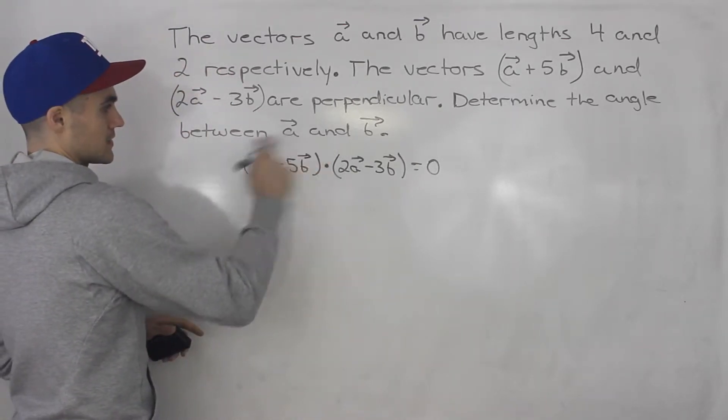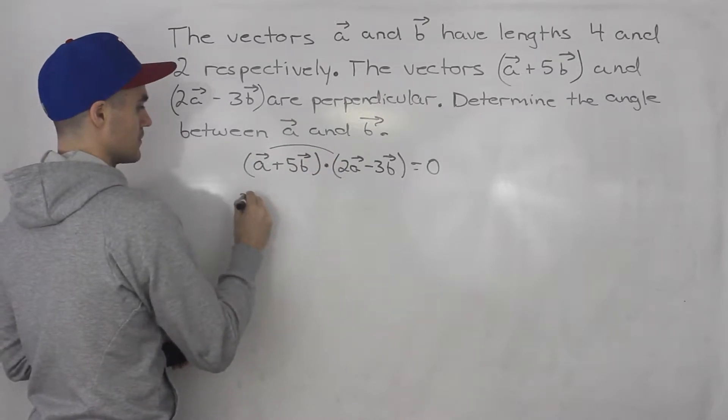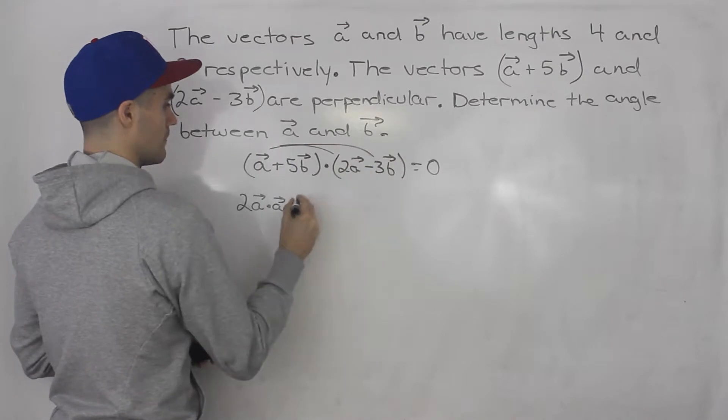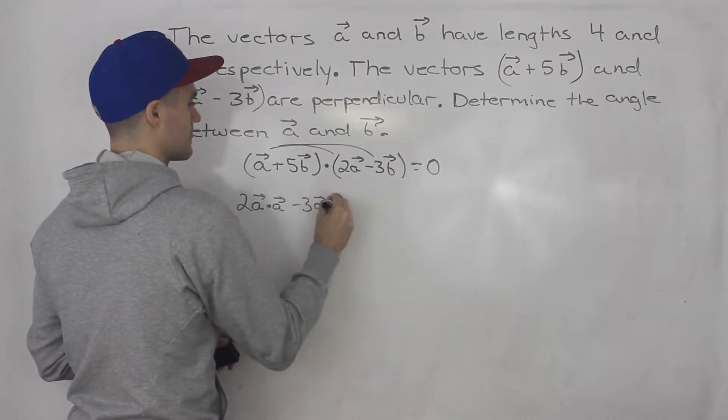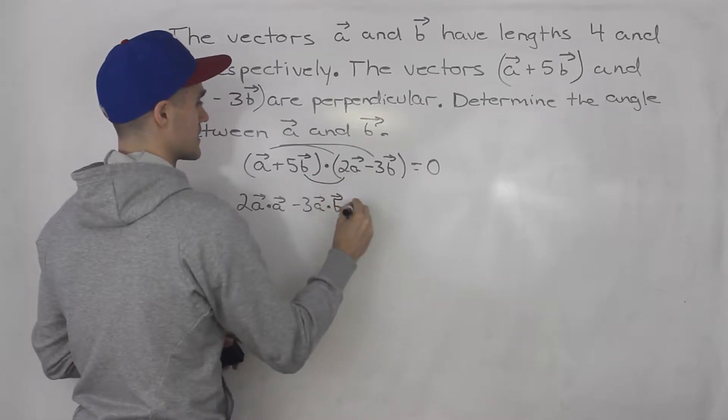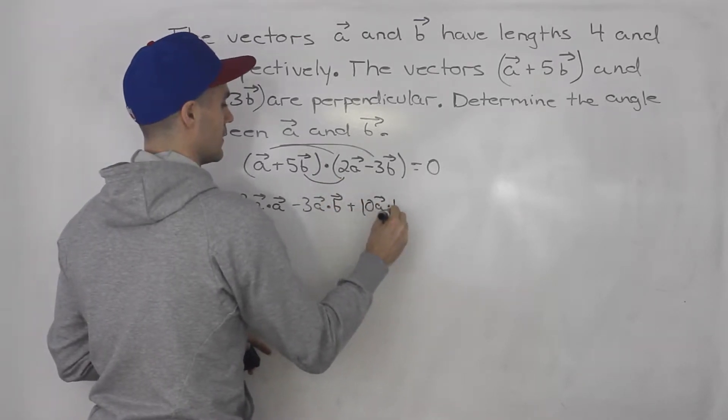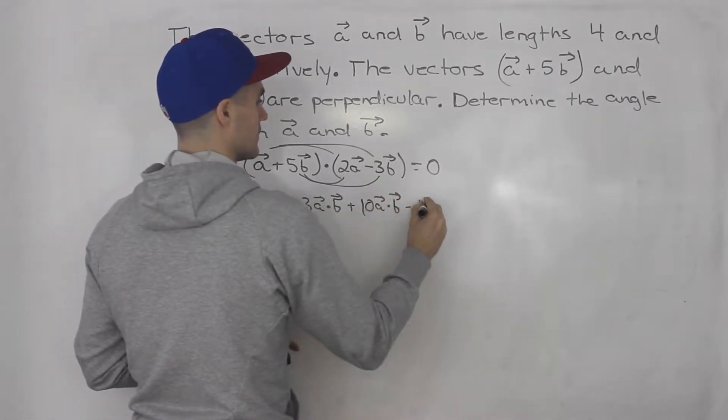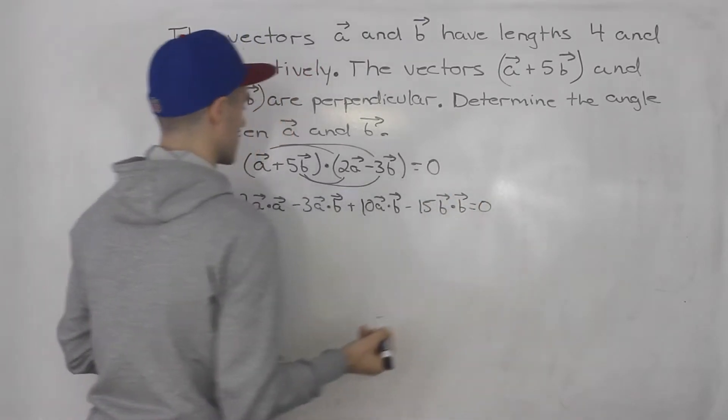And then what we can do is we can just foil this out. So we got 2a·a and then we got -3a·b and here we got +10a·b and then we got -15b·b that's equal to 0.